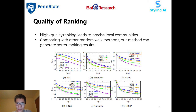Our method is denoted by blue lines. From these figures, we can see that our method generates better ranking results, which explains the significant improvements in local community detection over all other baselines.